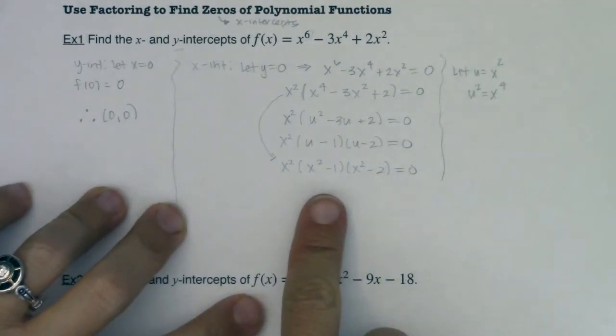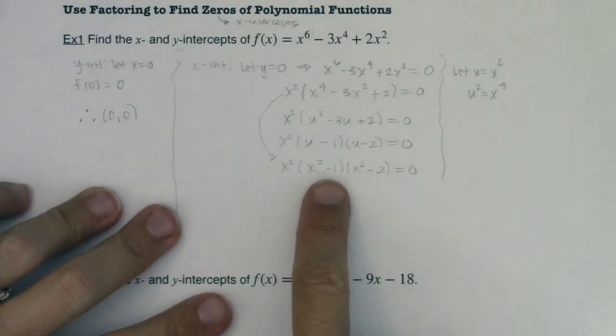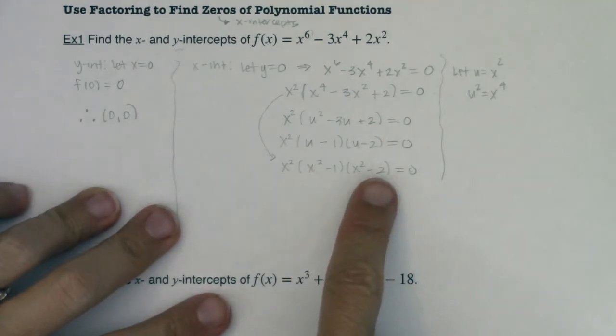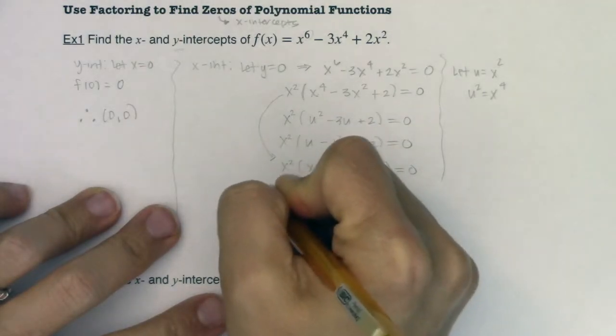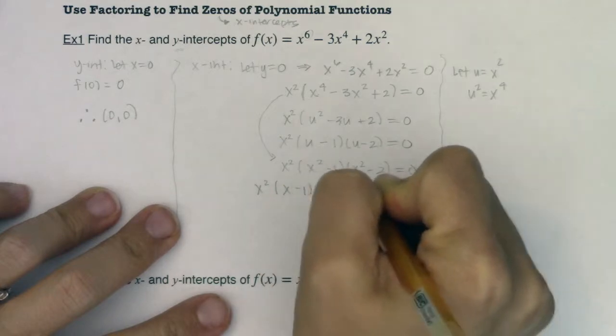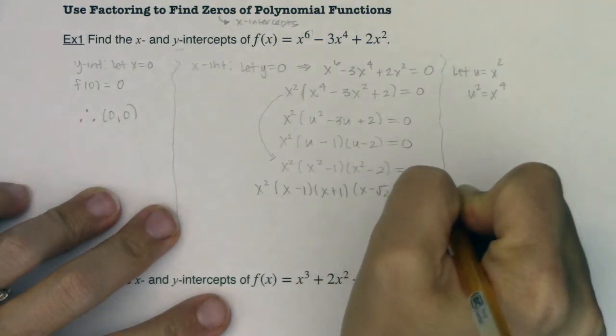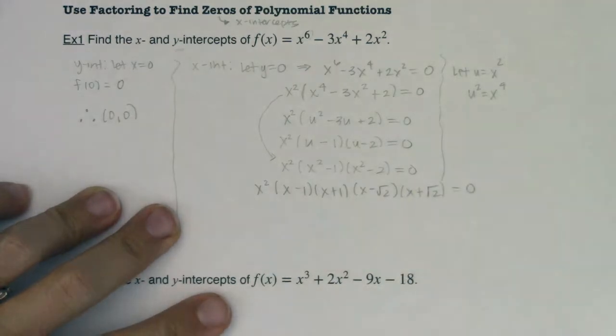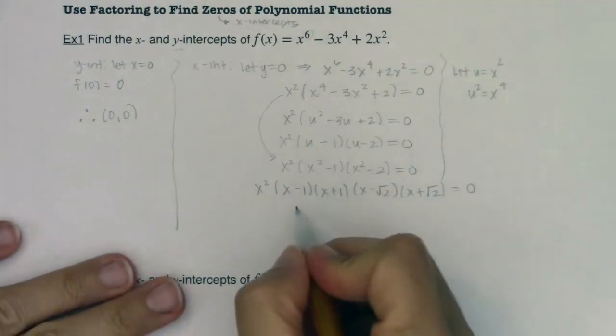Now, I'm still not done, okay? I can break down these quadratic factors. This is a difference of squares, and this is also, it's just that the square root of two isn't an integer. So I'm looking at x squared times x minus one, x plus one, x minus root two, x plus root two being equal to zero. So I'm picking up a lot, a lot of different zeros.